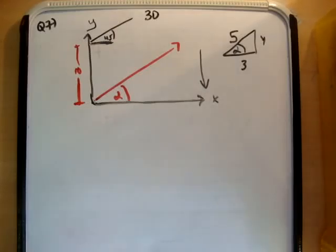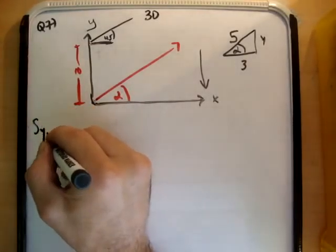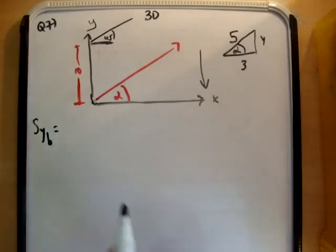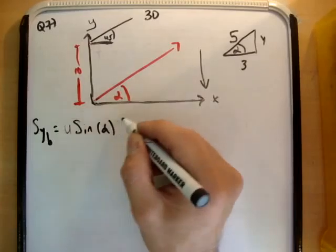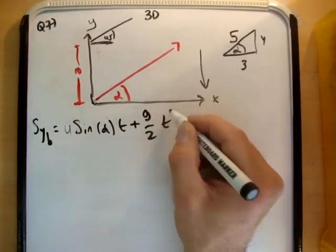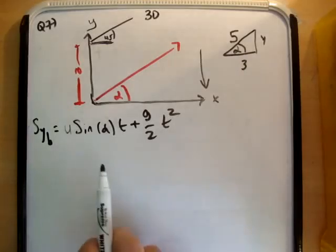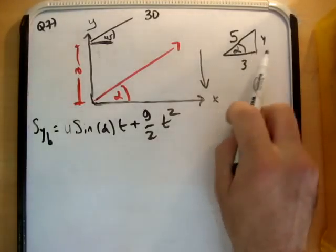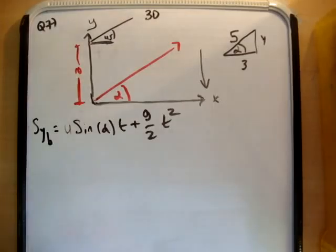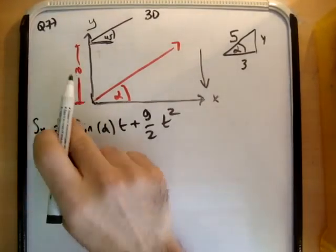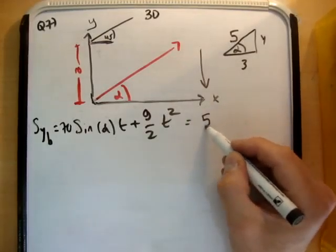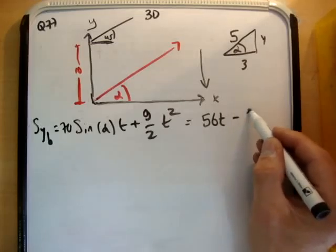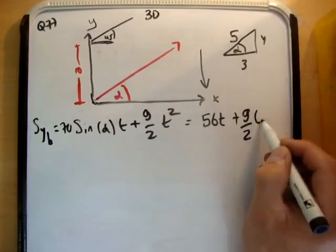We will begin with our UVAST. I'm not going to go into much detail with the UVAST. So we'll say s sub y of the bullet is equal to ut plus a half at squared. So that is u times the sine of alpha t plus g over 2 t squared. And sine of alpha is equal to 4 fifths, and also we're given that u is equal to 70. So if you just rearrange that, you'll find out the following. You'll find out that it's 56t plus g over 2 t squared, like so.